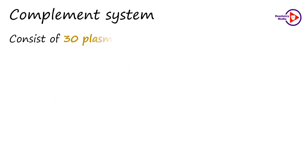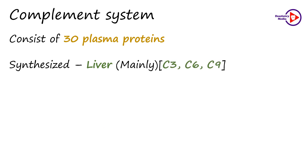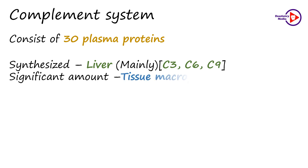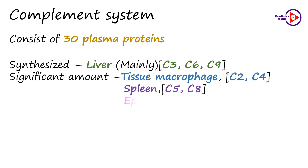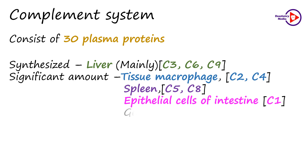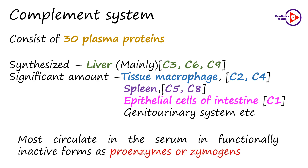The complement system consists of 30 plasma proteins. They are mostly synthesized in the liver, specifically C3, C6 and C9. Significant amounts are also produced by membrane proteins expressed on the cell surface of tissue macrophages, specifically C2 and C4. C5 and C8 are produced by the spleen. Epithelial cells of the intestine produce C1, and smaller amounts are also produced by the genitourinary system. These complement proteins mostly circulate in the serum in a functionally inactive form, known as the proenzymes or the zymogens.